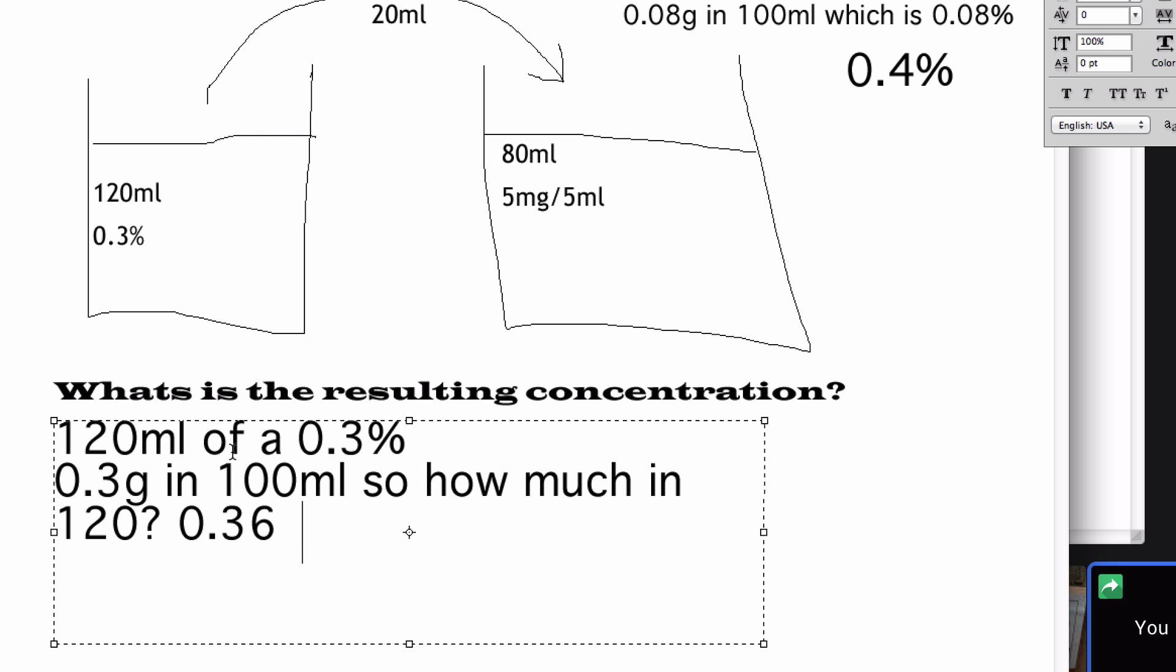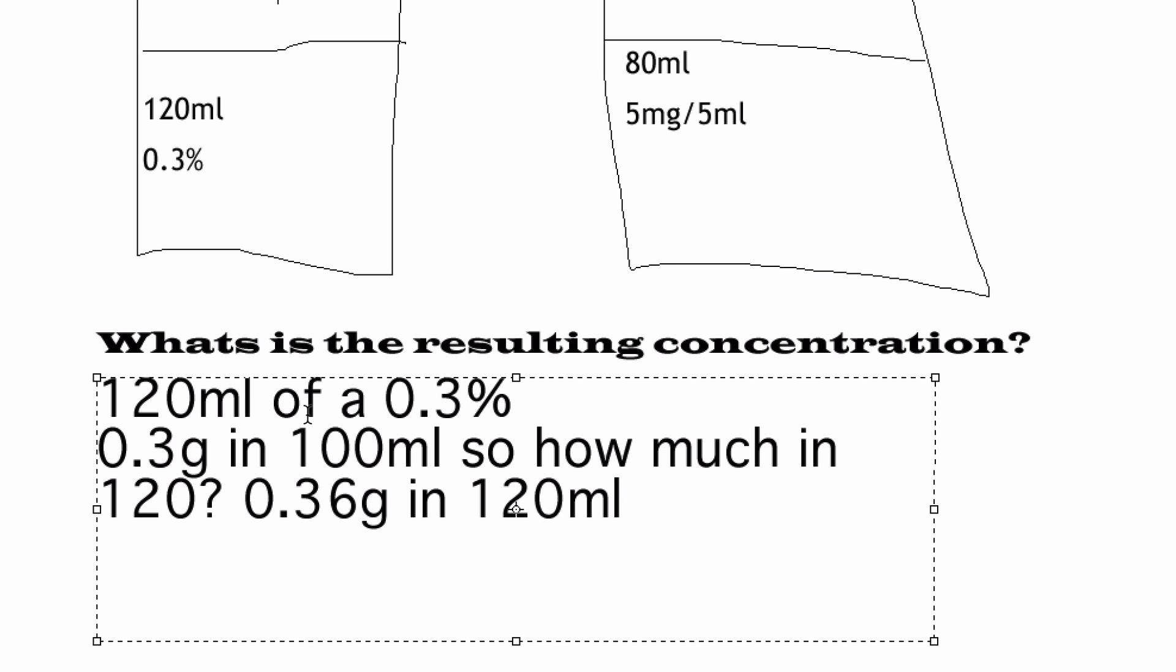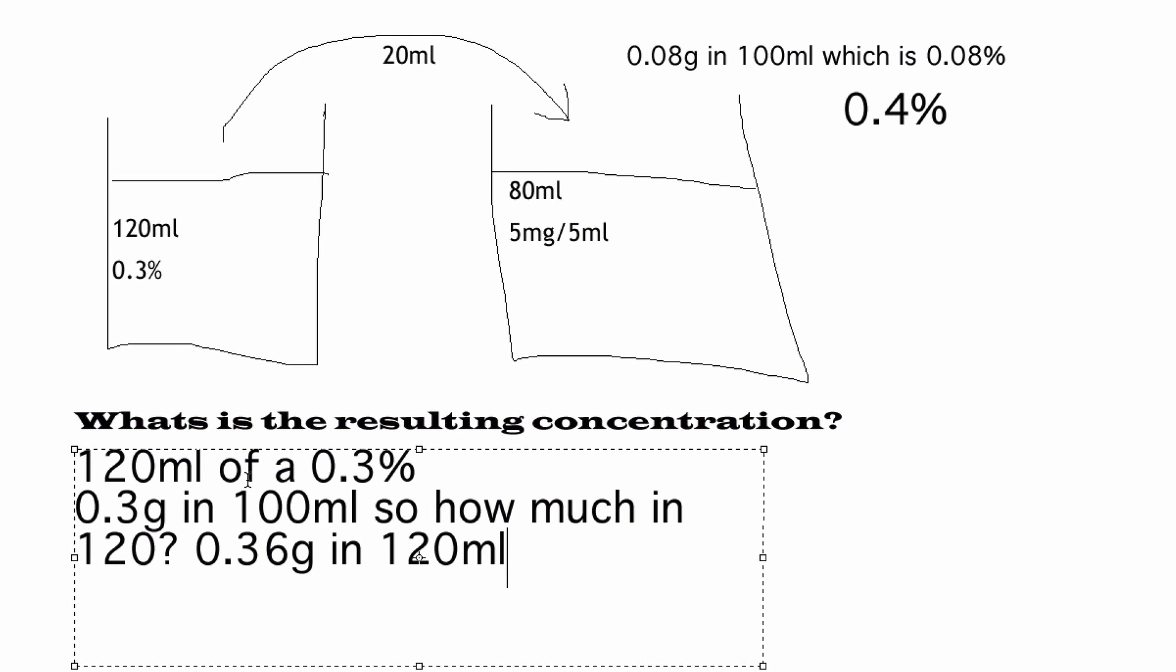So that 120 mils doesn't actually, you don't really need to know that, do you? You're just taking 20 mils of a 0.3% solution. So 0.3 grams in 100 mils, so you divide by 100, then you times that by 20. So you're transferring 0.06 of a gram into the new solution.